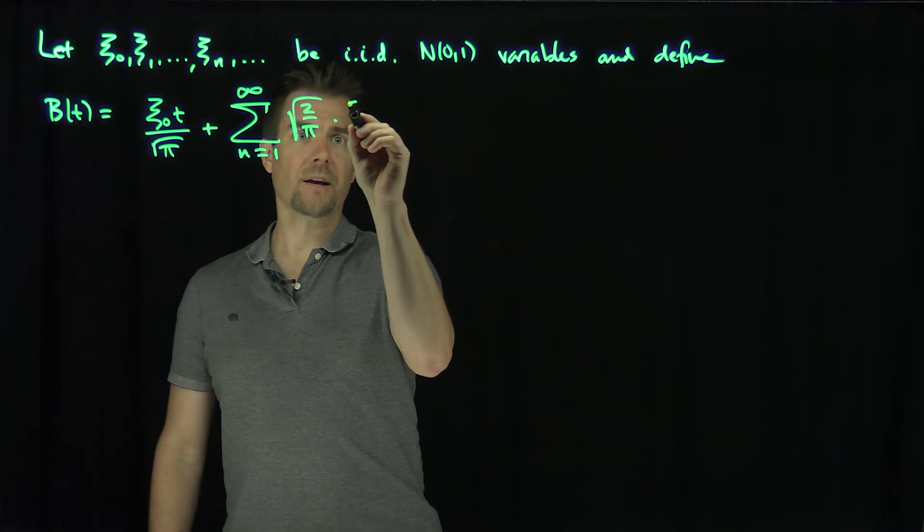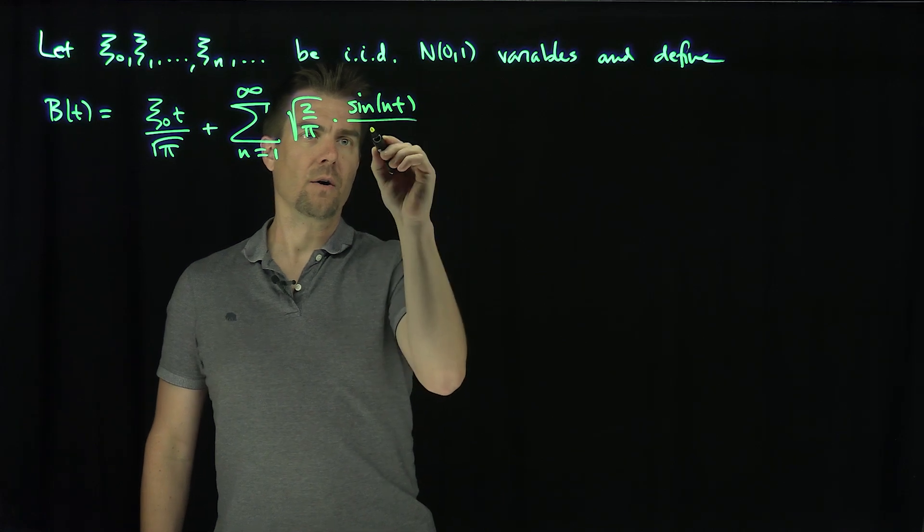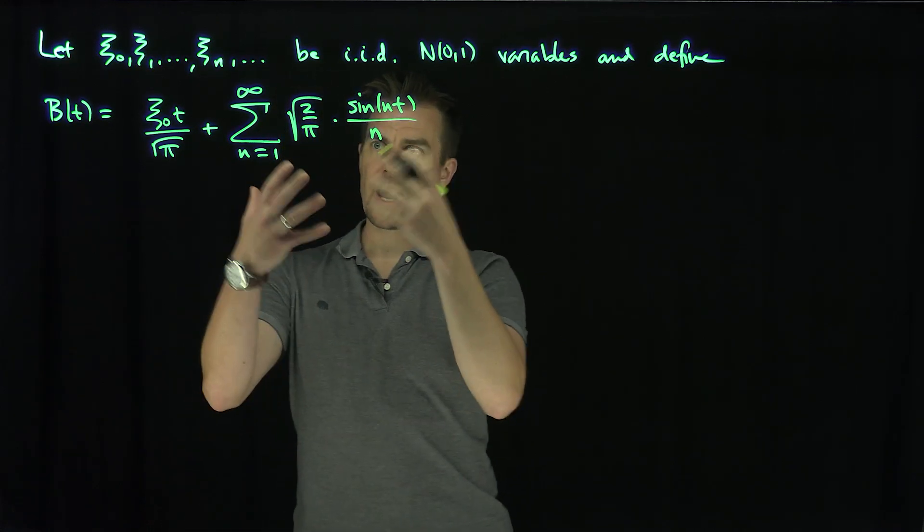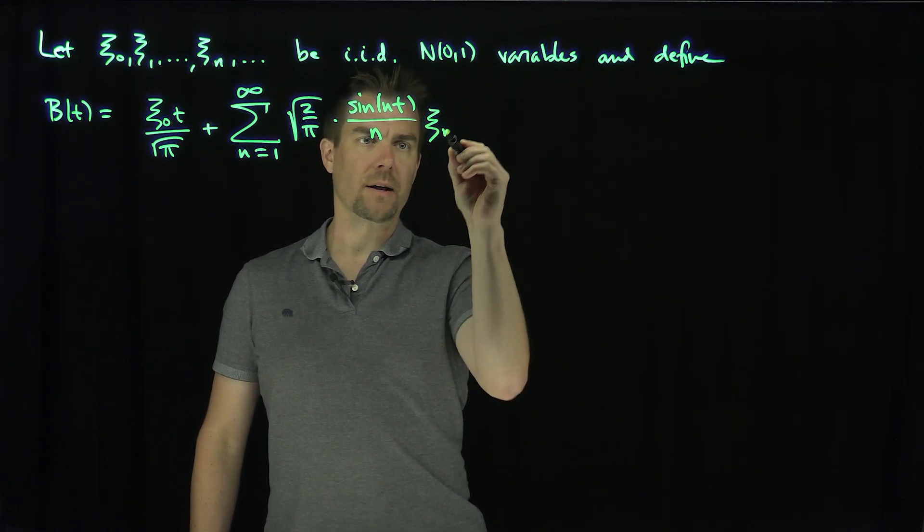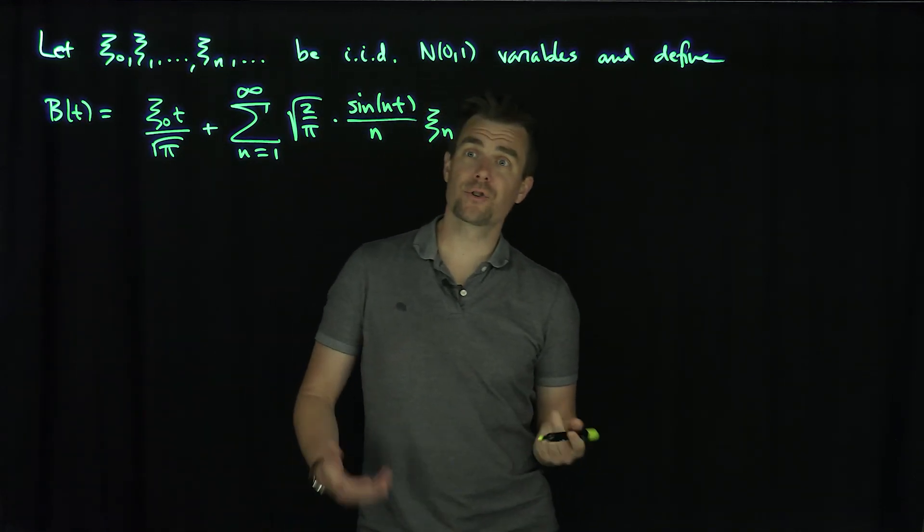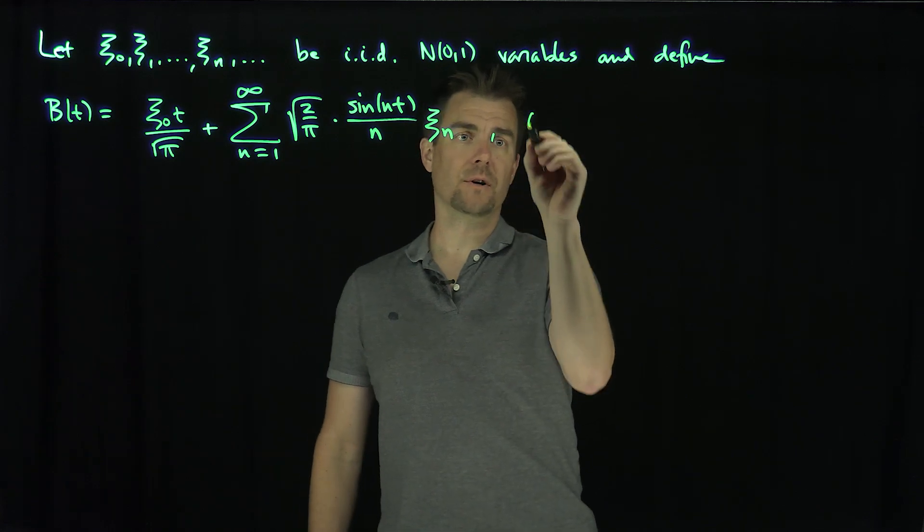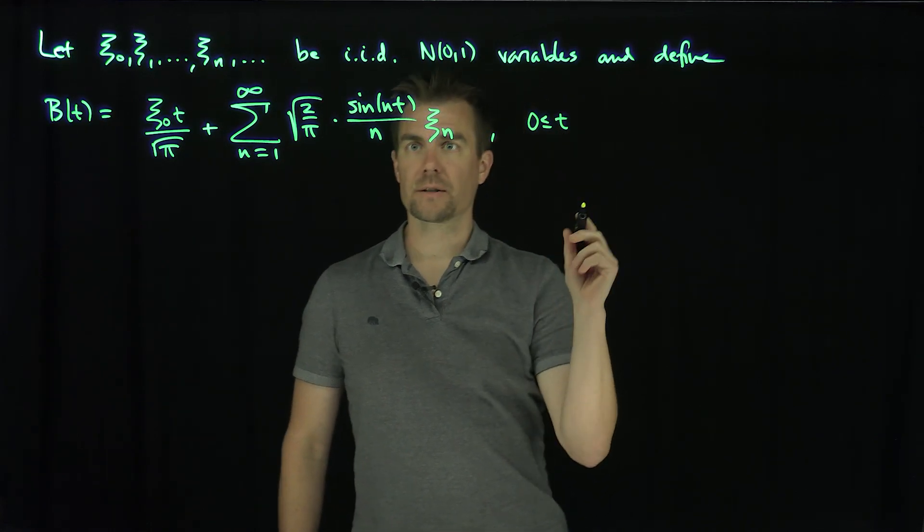Then I'm going to have the sine of nt over n, and that's just an actual deterministic series, and I'm going to multiply that with xₙ. So this is going to be my definition of Brownian Motion, this is defined for t between zero and π.